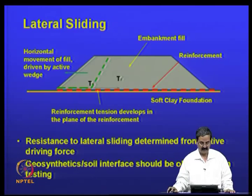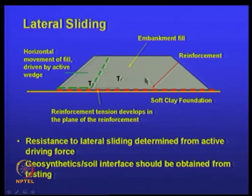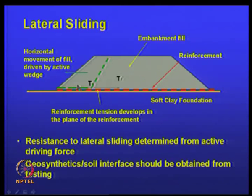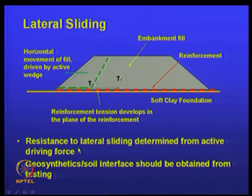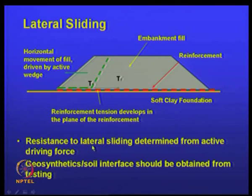Lateral sliding: there is a tendency for the embankment material to move outward — called horizontal movement of the fill driven by the active wedge. The reinforcement force acts in the opposite direction to prevent this wedge from moving out. Reinforcement tension develops in the plane of the reinforcement. The resistance to lateral sliding is determined from the active driving force, and the geosynthetic-soil interface friction should be obtained from testing.